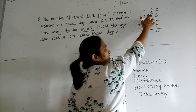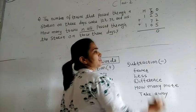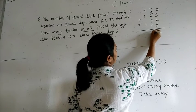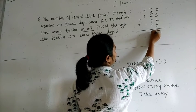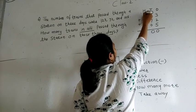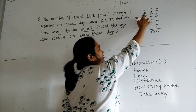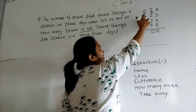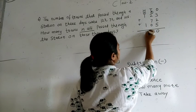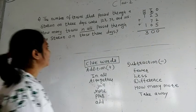Then 1 plus 2 is 3, and 3 plus 7 is 10, and 10 plus 0 is 10. So I write 0 again, and carry 1 to the hundreds column. Then 1 plus 1 is 2, and 2 plus 1 is 3. So our answer is 300.